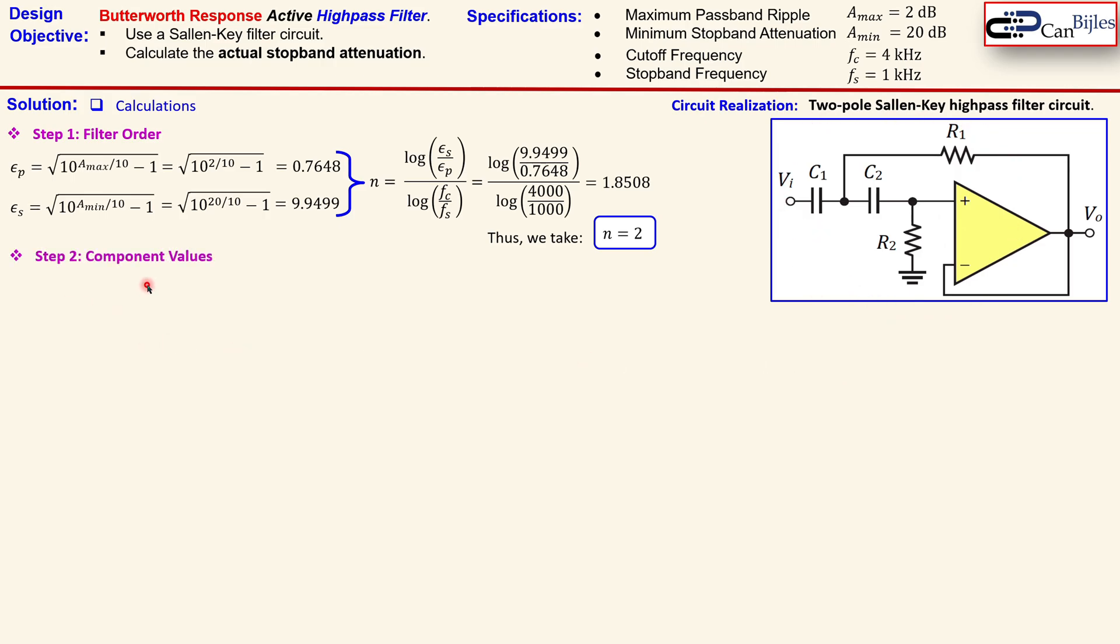That's the next step. Step 2 is the component values, so how can we do that now? In order to do this more efficiently, we can say let's set C1 and C2 equal to each other and pick a value that is in this case 10 nF.